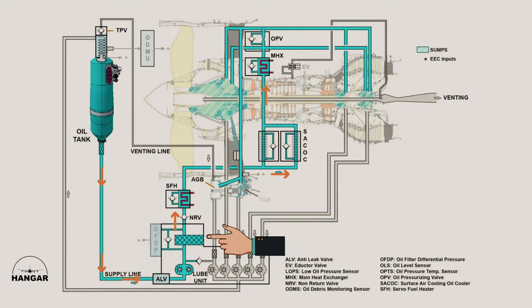The pressurized oil is directed to the supply oil filter and then to the heat exchangers via a non-return valve, NRV. The NRV prevents oil from draining from heat exchangers, which are located above the supply pump, down to the AGB through the lube unit. The oil is cooled down when passing through the servo fuel heater, the surface air-cooled oil cooler, and the main heat exchanger.